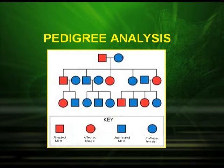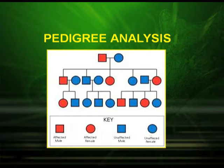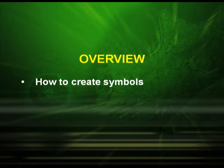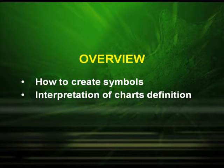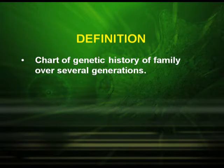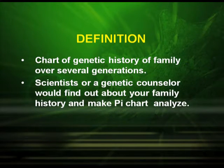The following diagram shows the male and the female and the mating type with symbols. The square represents the male and the circle represents the female. The red colored shapes show affected individuals, whether male or female — the red square denoting an affected male and the red circle showing an affected female. The blue shapes show unaffected male and unaffected female.